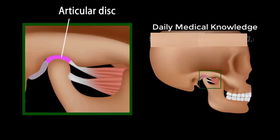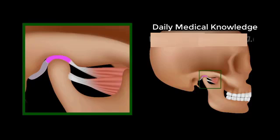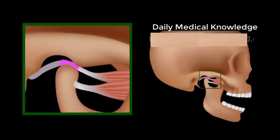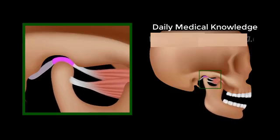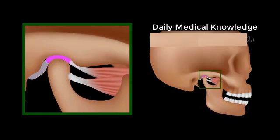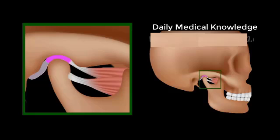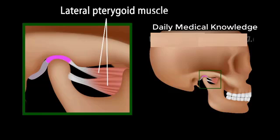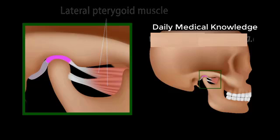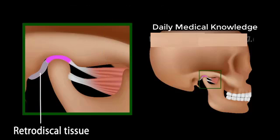The unique feature of the TMJ is the articular disc, a flexible and elastic cartilage that serves as a cushion between the two bone surfaces. The disc lacks nerve endings and blood vessels in its center and therefore is insensitive to pain. Anteriorly, it attaches to the lateral pterygoid muscle, a muscle of chewing. Posteriorly, it continues as retrodiscal tissue fully supplied with blood vessels and nerves.